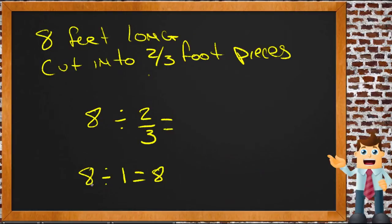Because when we divided it into pieces of one foot each, our output number, our finishing number, was the same as our starting number. Eight divided by one is eight. You're going to be dividing it by something smaller than one.